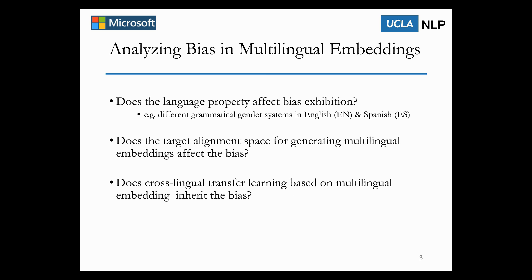In this work, we aim to understand the following questions. First, we would like to know how language properties affect bias exhibition — for example, the different grammatical gender systems in different languages. Does such a property cause different biases in English and Spanish? Second, does the choice of target space for the embedding alignment affect the bias? Third, does cross-lingual transfer learning also inherit the bias from multilingual word embeddings? We use gender bias as an example to do the analysis, but our methods can also be used for other bias analysis.